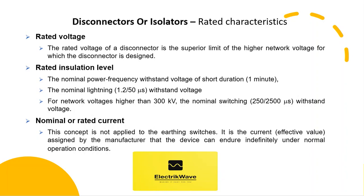Rated voltage is the superior limit of the higher network voltage for which the Disconnector is designed. The rated insulation level includes: the nominal power frequency withstand voltage of short duration (1 minute); the nominal lightning withstand voltage (1.2 by 50 microseconds); and for network voltages higher than 300 kV, the nominal switching withstand voltage (250 by 2500 microseconds).